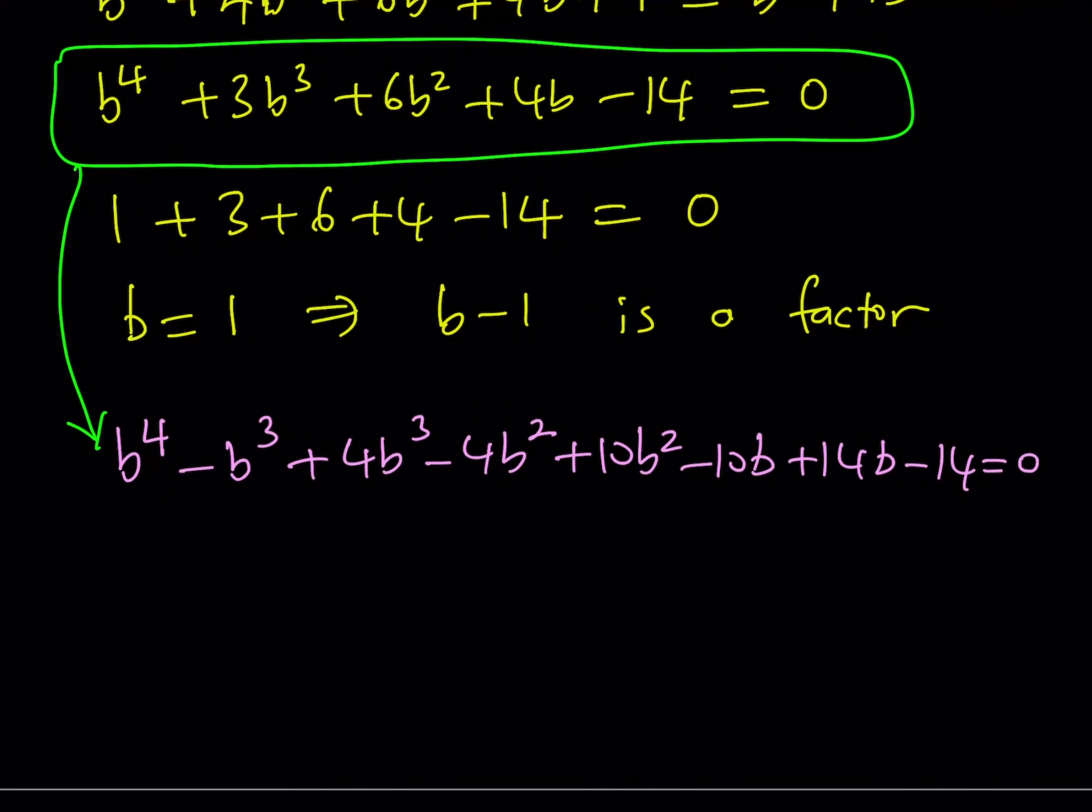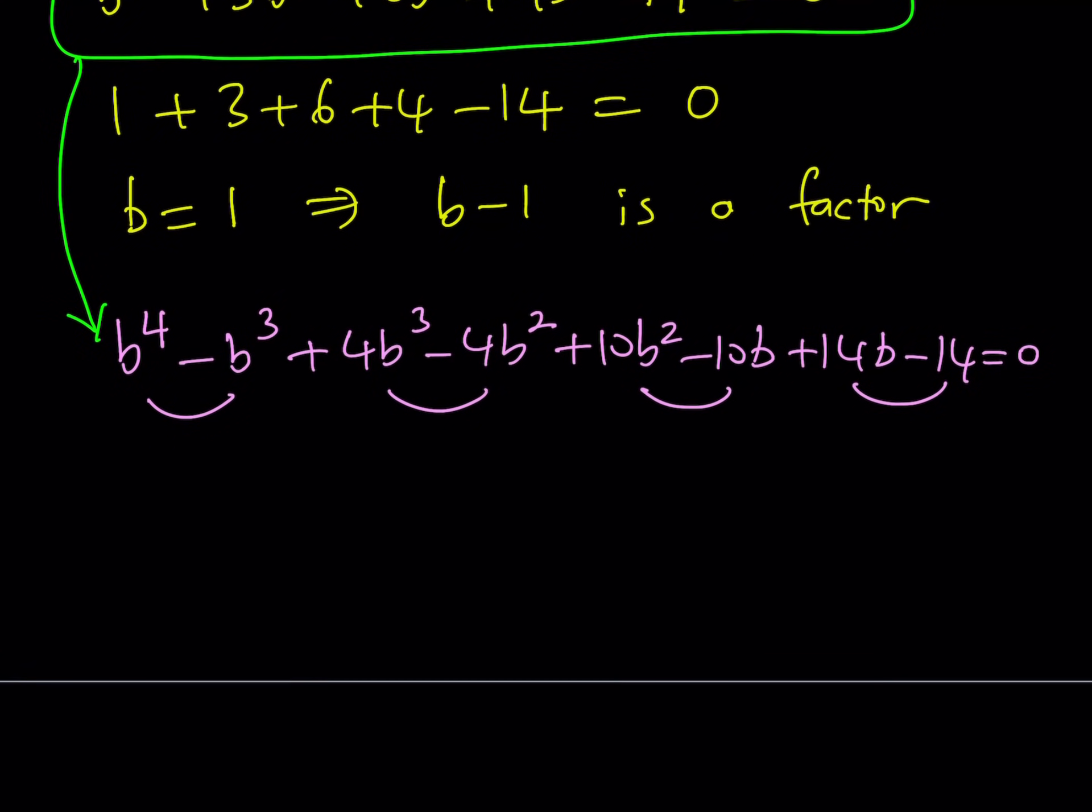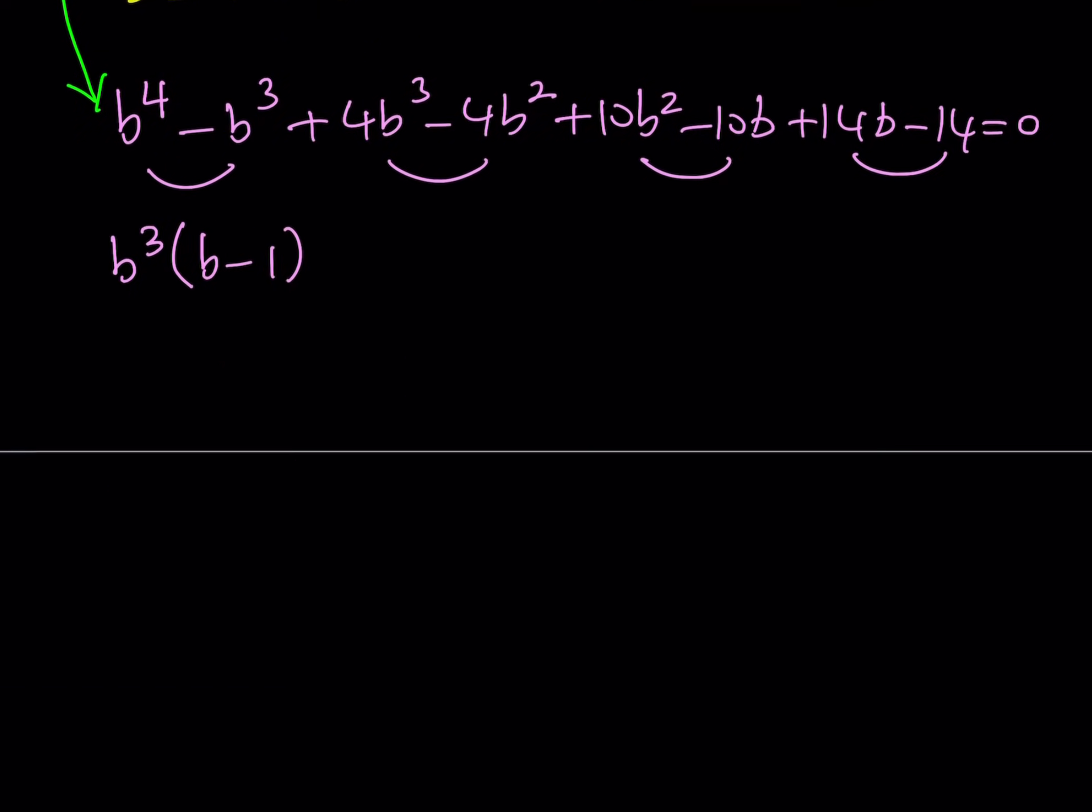Now, this equation is factorable by grouping, of course. So, I'm going to be splitting it up into groups of two and then factor each one. So, we know that B minus 1 is going to be a factor, but this just verifies it. B cubed times B minus 1 and then plus 4B squared times B minus 1 and then 10B times B minus 1 plus, finally, 14 times B minus 1 and the whole thing equals 0.